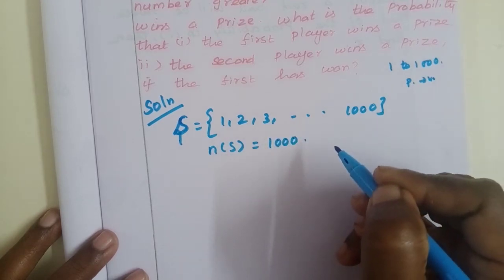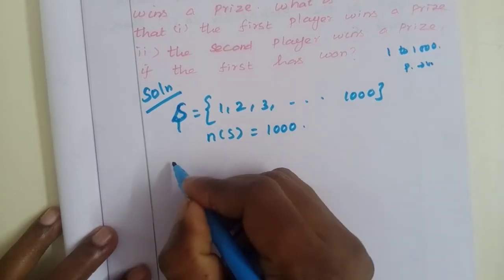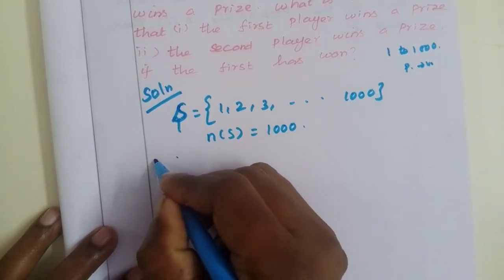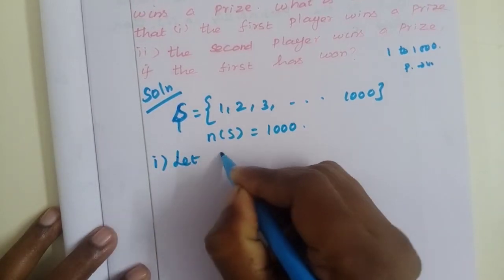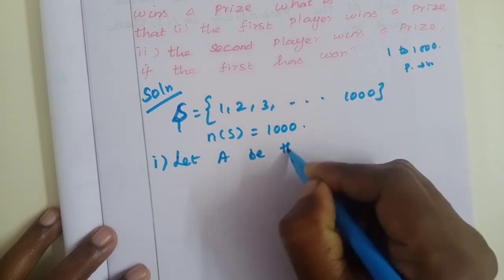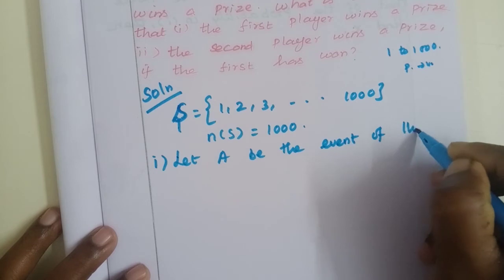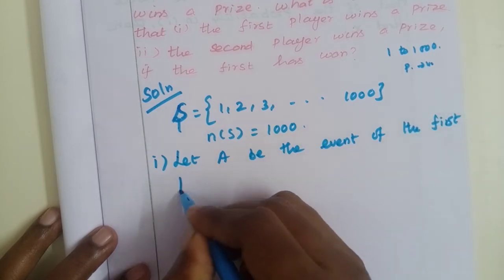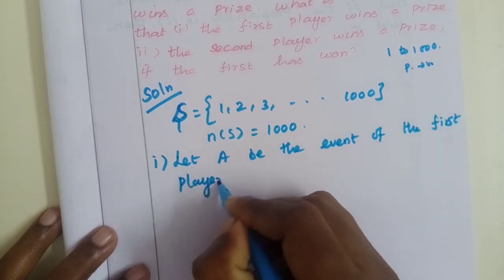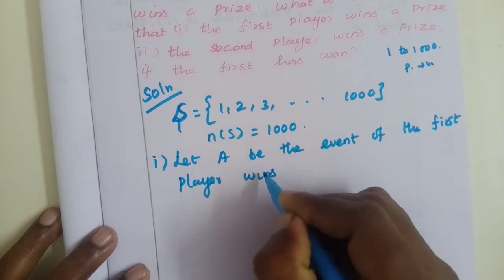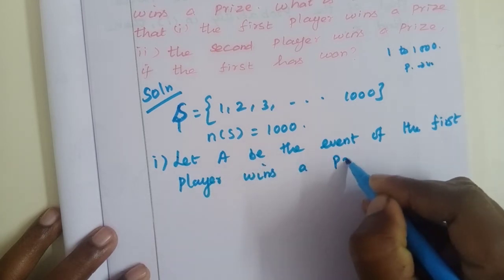First event: Let A be the event that the first player wins a prize.